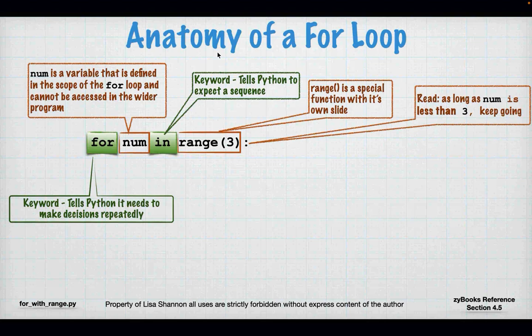I have my `for` keyword. For basically says you're about to make a decision repeatedly. Then I have `num` — just the name of a variable, it could have been Fred or X. A variable name has to be in that place, but I don't have to define it anywhere else. Python's going to define that for me, take care of setting num, and `num` only exists within that for loop — it goes away after the for loop.